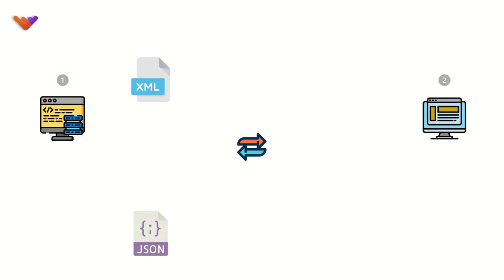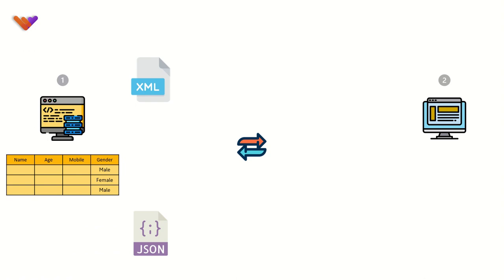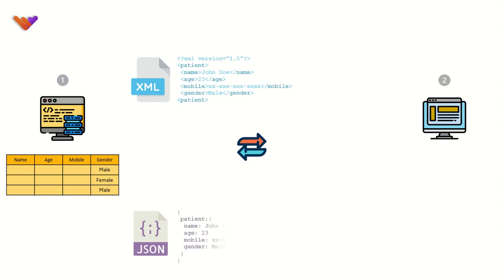Syntactically, that doesn't pose any challenge since all platforms today have the capability to generate and consume XML or JSON. Consider the patient table — say system 1 has column names defined something like this. We can send this information in the form of XML or JSON where the column names are keys and the values are embedded as is. On the other hand, system 2 can parse this data using its inbuilt parsing libraries. The real challenge is in terms of semantics — that is, interpretation of the exchanged data.